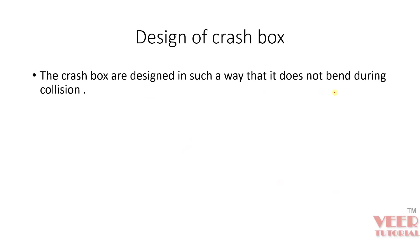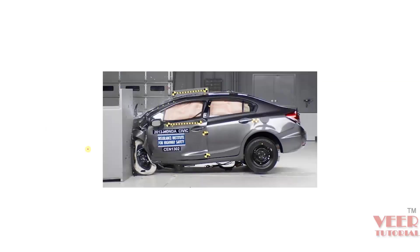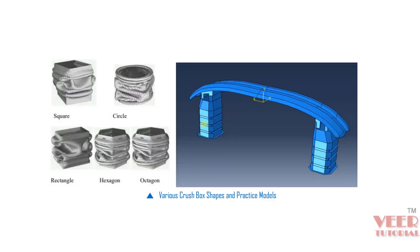Now let's see the design criteria for the crash box. Crash boxes are designed so that they do not bend during the collision — because if it bends, it will transfer all the energy to the passenger or other vehicle components. Instead of bending, it should crumple. If the crash box bends, it absorbs lesser energy and the shock load is transferred to other parts and the occupant. Here you can see the physical testing of an automobile where a car is impacted on a rigid wall at a certain velocity. Different countries have different criteria for passenger safety.